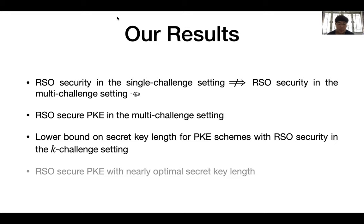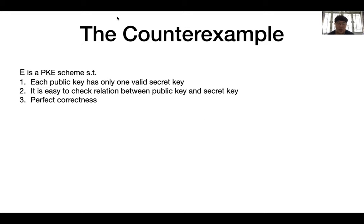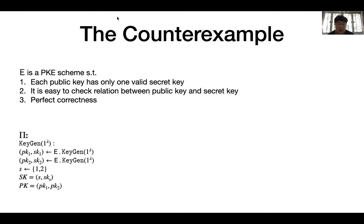Let's start with our counter-example. The counter-example is built on a semantically secure PKE scheme that additionally satisfies the following three properties: first, the PKE scheme has only one valid secret key for each public key; second, it is easy to verify if a public key and secret key pair is valid; and finally, the scheme has perfect correctness. Such a PKE scheme can be instantiated by, for example, the ElGamal encryption scheme. Now with this PKE scheme E, we can construct our counter-example scheme π as follows.